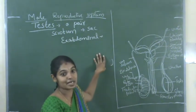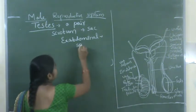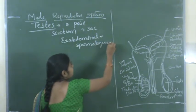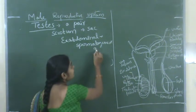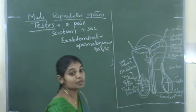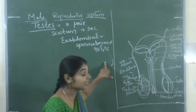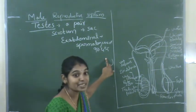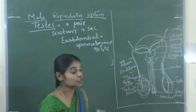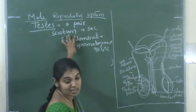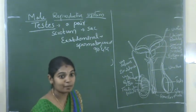Inside the body, the temperature is not sufficient for spermatogenesis — that means the production of sperms — because the temperature is very high inside. Our normal body temperature is about 98.4 degrees Fahrenheit. For spermatogenesis, 2 to 2.5 degrees less than this normal body temperature is required. That temperature is provided by the scrotum, which is outside the abdominal cavity. That is why the testes, where the sperms are produced, are located in the scrotum.